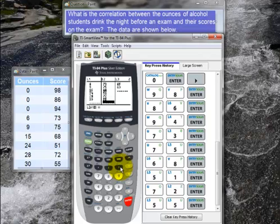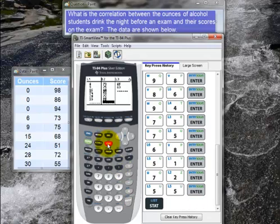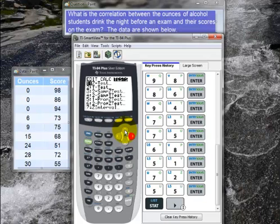Now that I've entered my data, I want to find the correlation. I go to STAT again. I go to TESTS. Then I use the up arrow, that's the easier way to find what I need, until I get to LIN REG T TEST. And I hit enter.